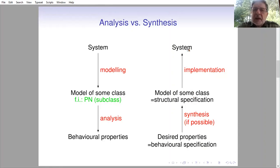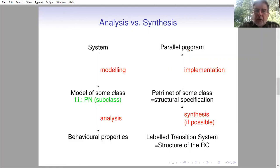And then implement this in the form of a system of some kind. For instance, we may start from a label transition system, synthesize a Petri net of some class with the label transition system as the reachability graph, and then implement the net in the form of a parallel program.